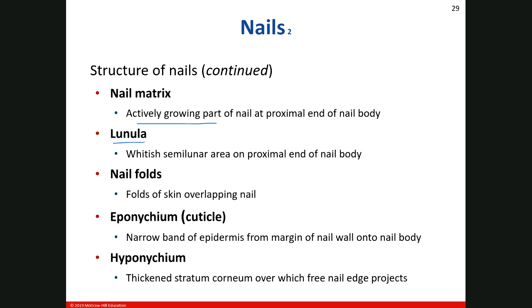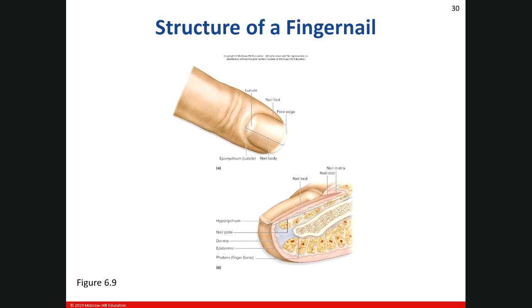The lunula — I always think of the moon, luna, it's very similar in spelling. That's the whitest portion of the nail. If you look at your fingernail, that's the whitest portion at the base. It's white because it's a thickened area of the epidermis, so the capillaries underneath just don't show through.